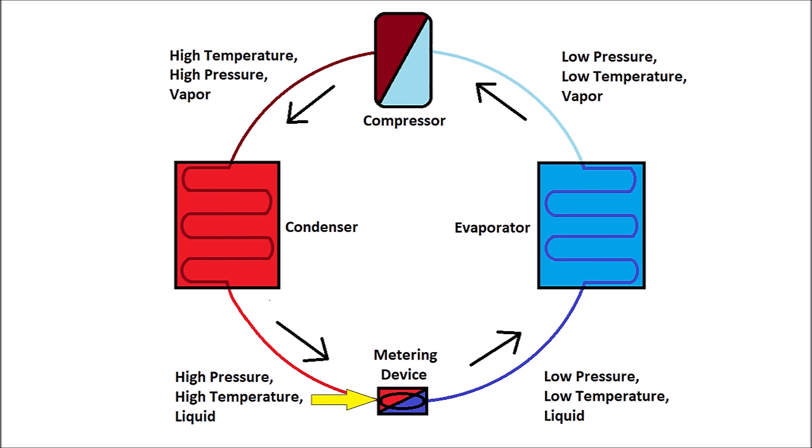The high pressure, high temperature liquid refrigerant enters the metering device, and then it exits the metering device as a low pressure, low temperature liquid. This is due to the very small opening within the metering device that lowers the pressure of the refrigerant.